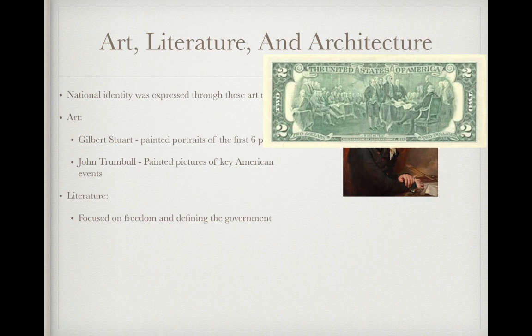Jumping over to literature. During this time period, literature will focus on freedom and defining the government. Thomas Jefferson is going to write a very important document called the Virginia Statute for Religious Freedom. You may be thinking, religious freedom — so what? We have that in the Bill of Rights, that's the First Amendment. Aha! This was prior to the Bill of Rights.